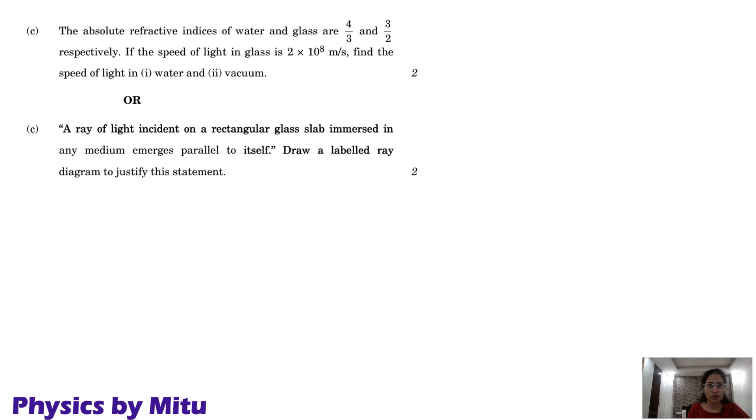Absolute refractive indices of water and glass are given. Speed of light in glass is given. You have to find speed of light in water and vacuum. Refractive index of glass with respect to air is given. Formula C upon Vg, we just discussed.